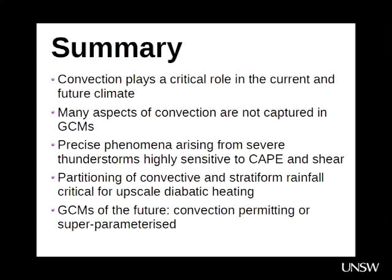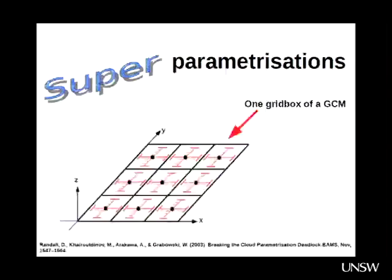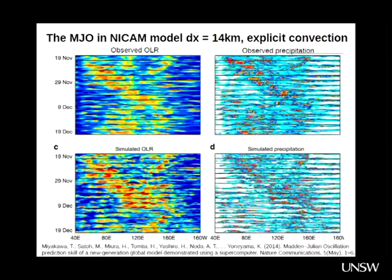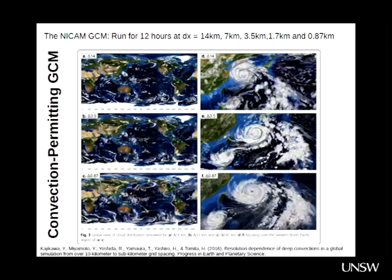The 14-kilometre Japanese GCM MJO simulation — they started with the 14-kilometre model, spun it up, then put in the 7-kilometre resolution, then the 3.5-kilometre and so on, running each for about 12 hours. So the 14-kilometre one might have run for a few days, but the final 0.87-kilometre run was only 12 hours.